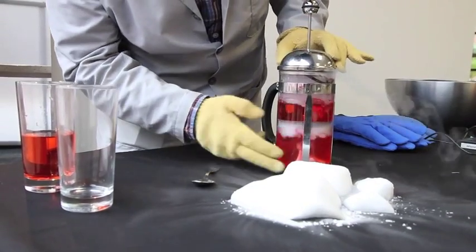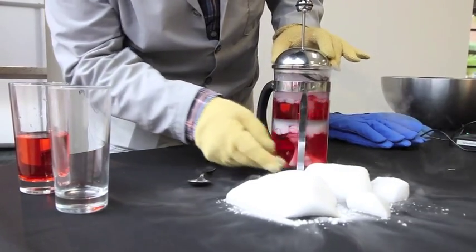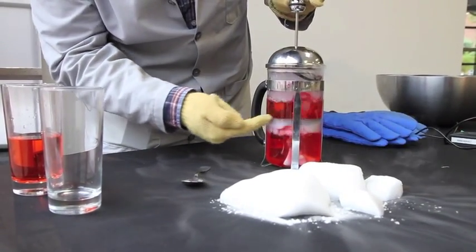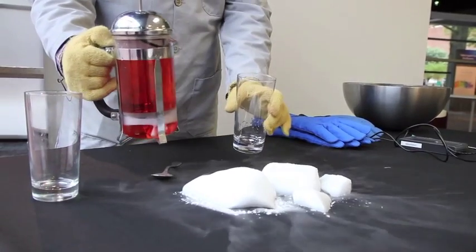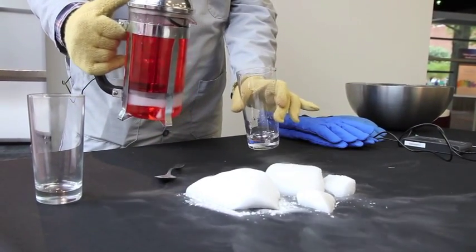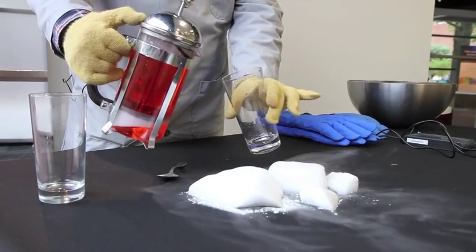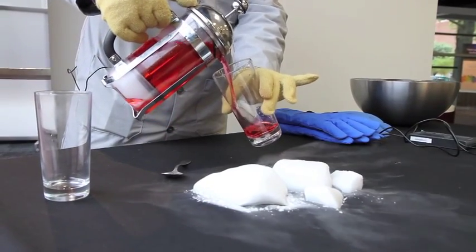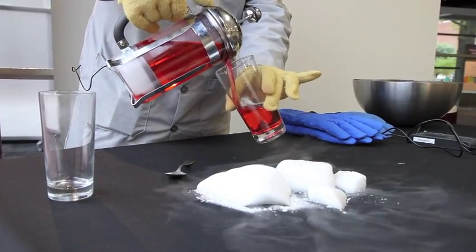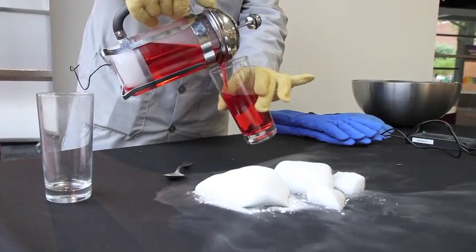So you can see the dry ice is sublimating away at the bottom here. The bubbles are rising up and the bubbles are able to pass through the screen. So the French press does a great job of keeping the dry ice trapped underneath while allowing those bubbles to percolate through. I don't have any worry for accidentally pouring dry ice into my friend's drink.